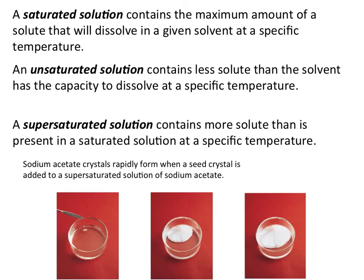Solutions are going to be described in one of three ways: they're either going to be saturated, unsaturated, or supersaturated. A saturated solution has a maximum amount of solute dissolved in a specific amount of solvent at a specific temperature. Once you can no longer dissolve any solute into the solvent, you have a saturated solution — assuming the temperature is being kept constant.